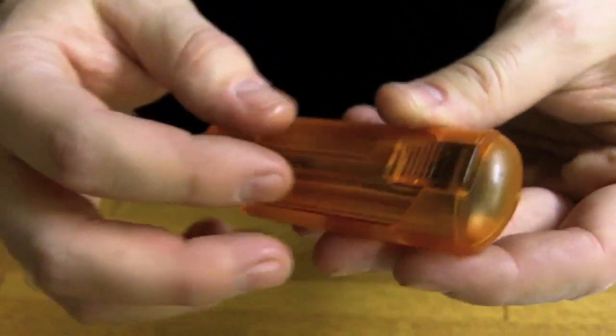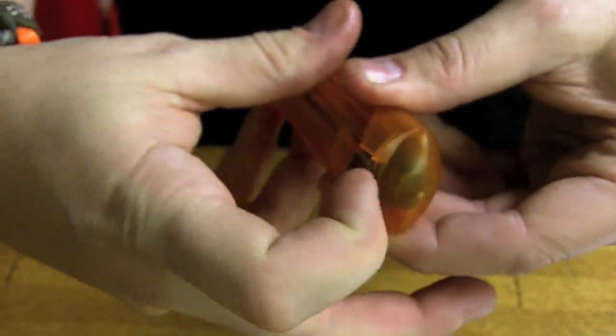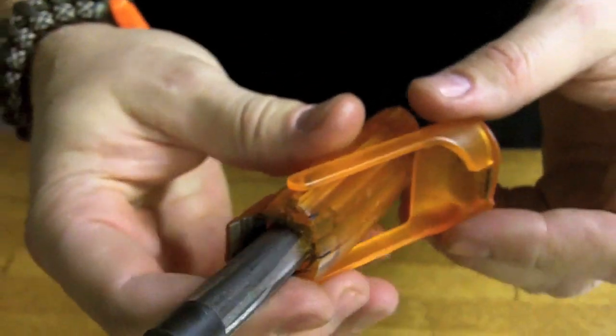This simply opens up its self-contained ferro rod, a very large one. You pull this open, and it'll open up and reveal the ferro rod.